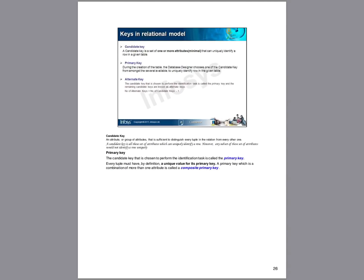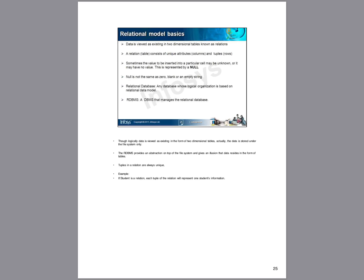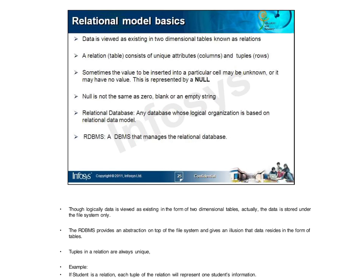Good afternoon everybody. Today I am going to discuss the relational database model. The relational database model is basically where the data is viewed in a two-dimensional table known as a relation. Each table consists of multiple attributes or columns and multiple rows named as tuples. To identify any one of the tuples, we need a column whose value must be unique and non-null — that column is considered as the primary key.